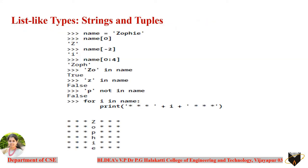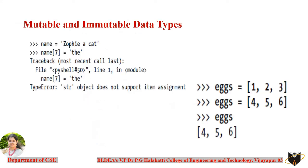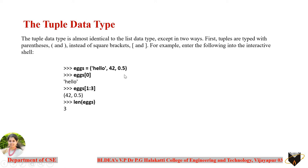The basic difference between tuple and list comes down to two important points. First, the way tuples and lists are created: tuples are created with round parentheses, whereas lists are created with square brackets. Though the creation is different, accessing elements or applying the slicing concept works the same for both.